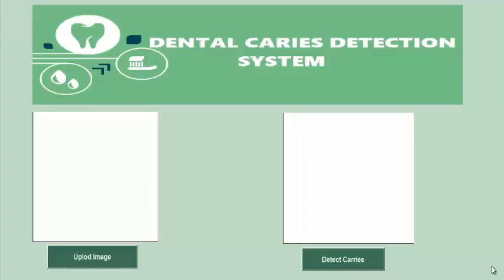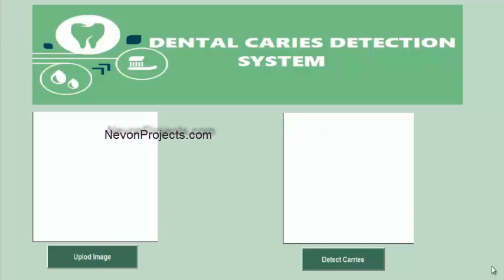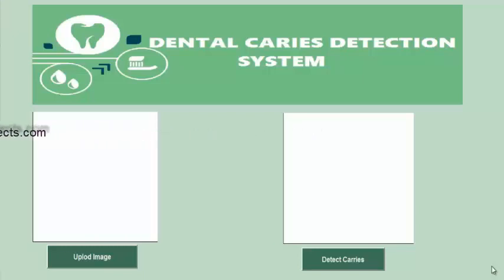Here we see the demonstration of a dental caries detection system using image processing. The system detects dental caries using image segmentation. It first uses image pre-processing steps to remove noise and other environmental interference. Based on connected components, the system identifies caries and specifies whether a tooth contains caries or not. The system is able to detect caries with a 60 to 80 percent success rate.